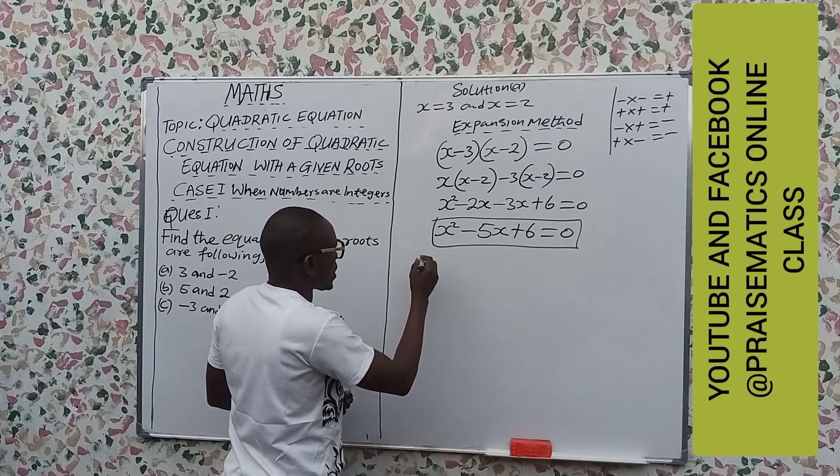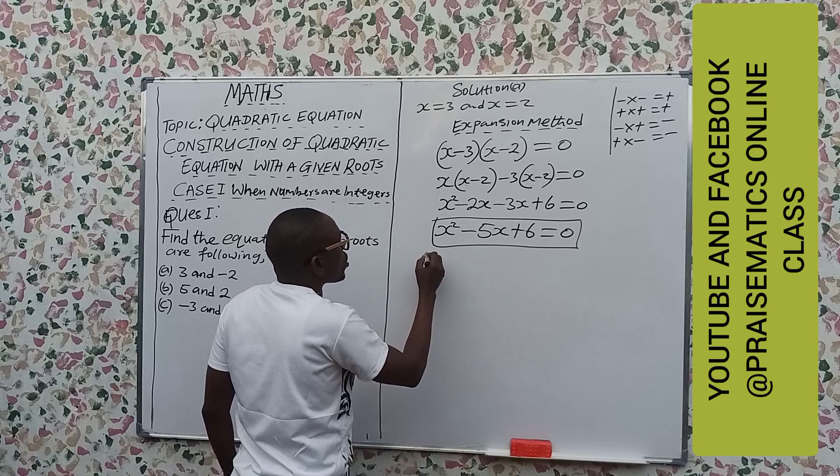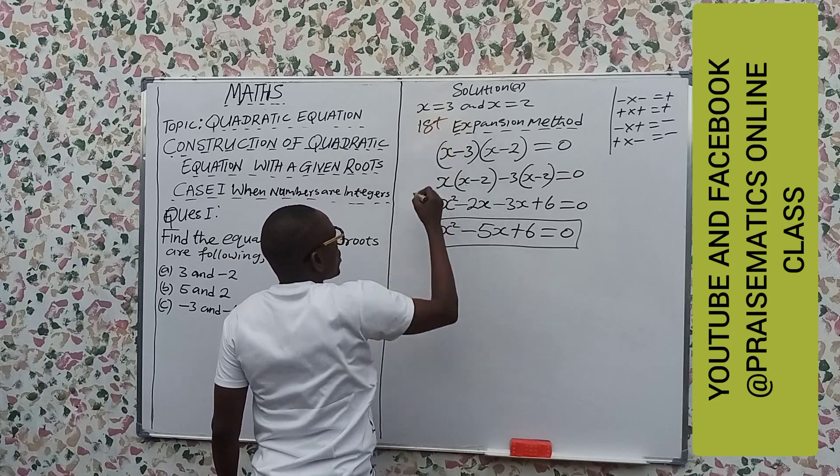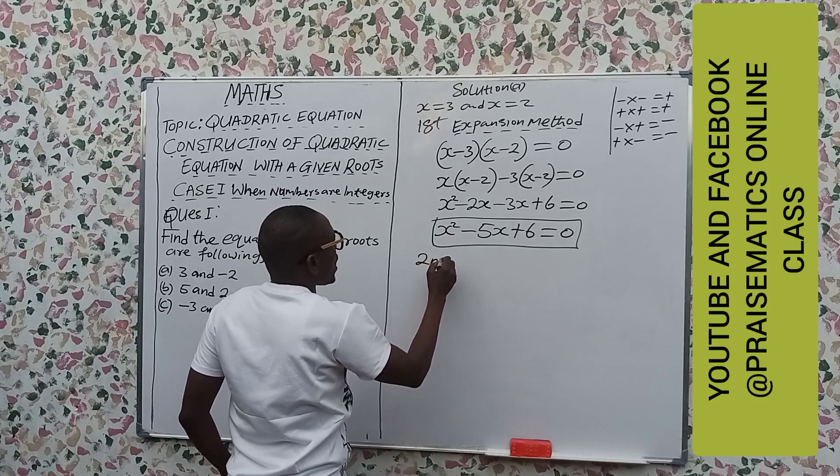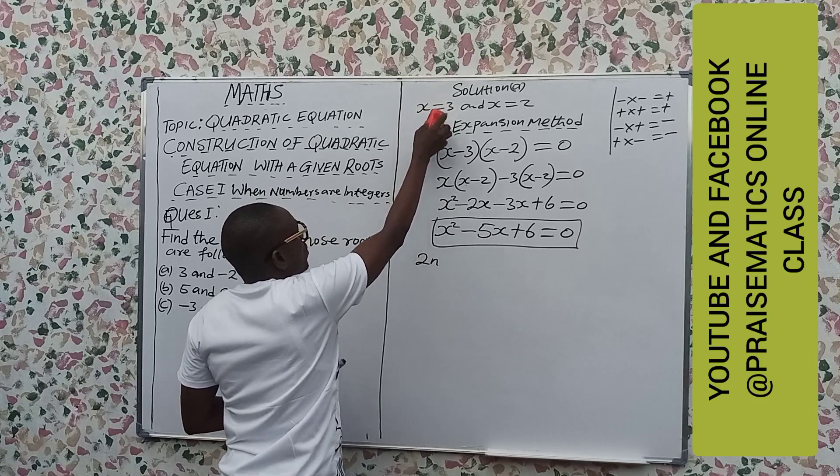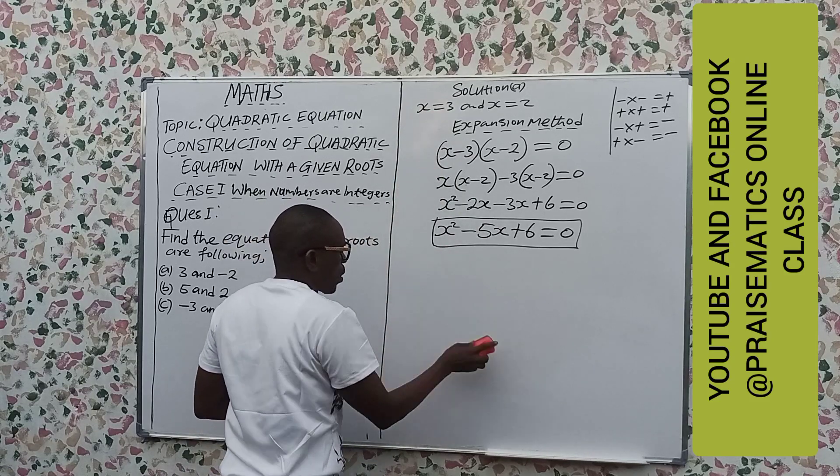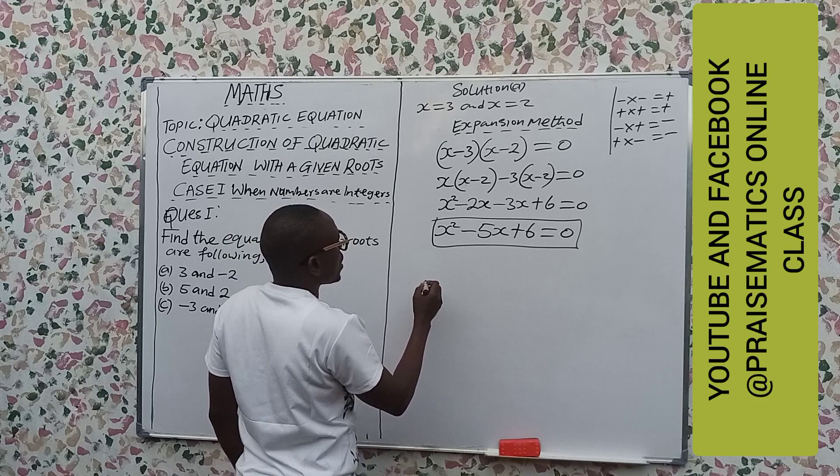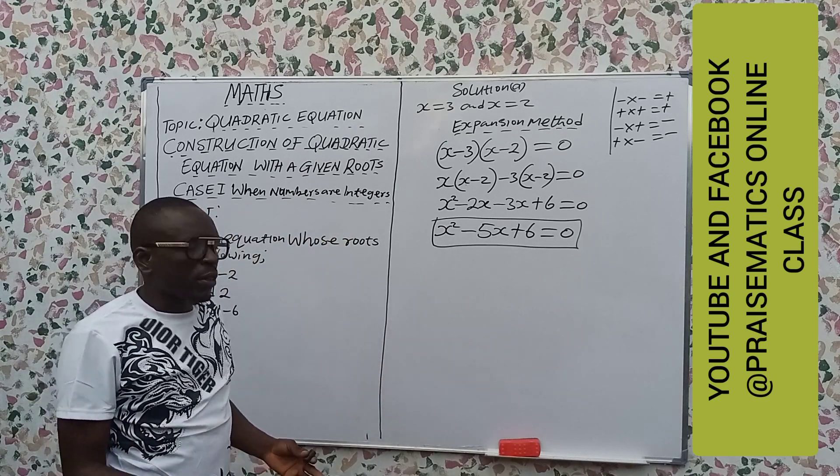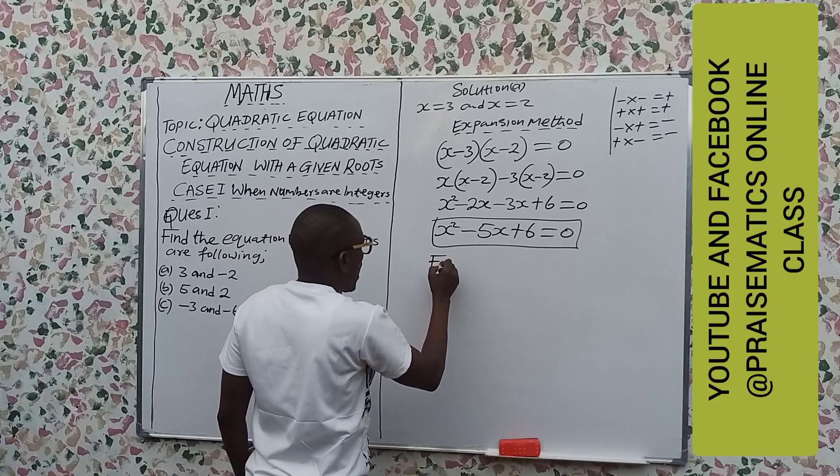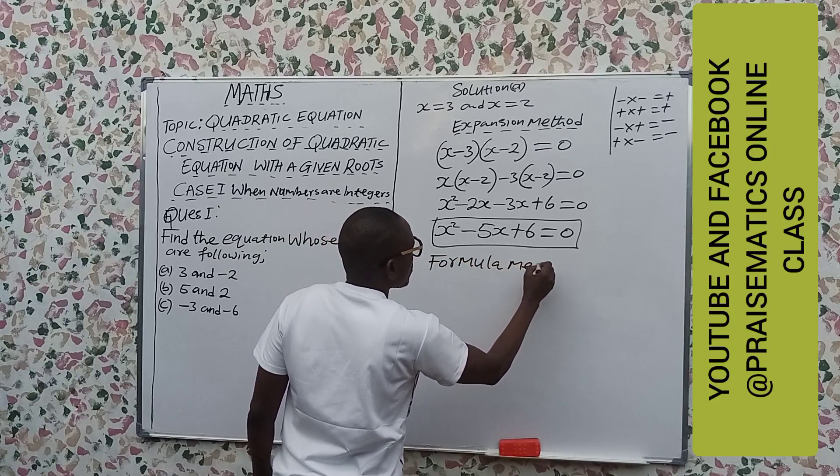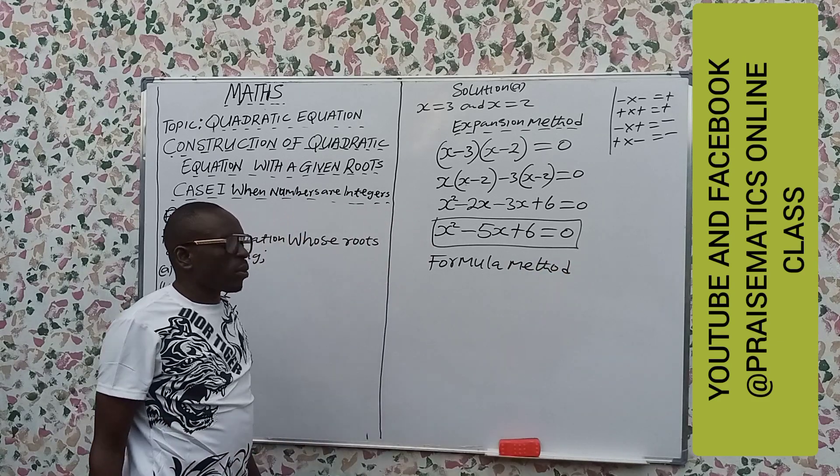Now let's look at the second method or another method. Second method, this is the first method expansion. This is formula. So we have solved the first method. Let's look at the second method of solving this, and that one is called formula method. We call it formula method.